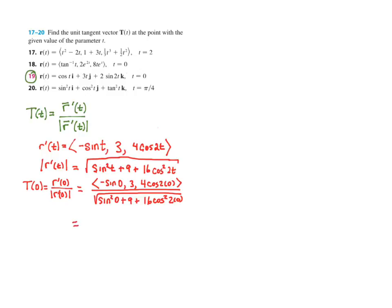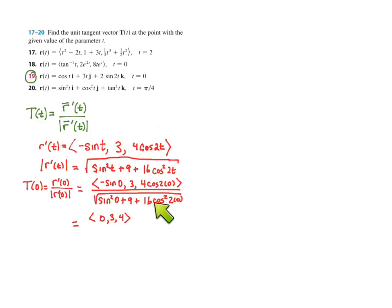Let's simplify the top and bottom. Sine of 0 is 0, then 3, and cosine of 0 is 1, so 4 times 1 is 4. On the bottom, sine squared of 0 is 0, plus 9, plus 16 times cosine squared of 0, which gives square root of 9 plus 16, which is the square root of 25, which is 5. So the vector is 0, 3, 4 over 5 — or dividing each component by 5: 0, three-fifths, and four-fifths.